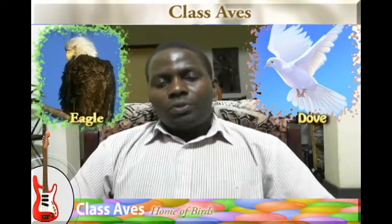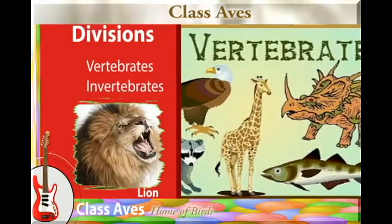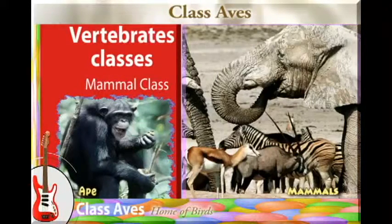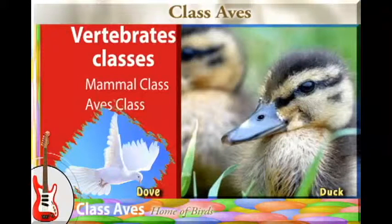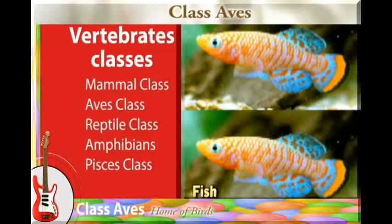Welcome again to this session where we are going to talk about birds. To remind ourselves, we need to go back and find out what other classes there are. Previously we talked about the divisions of the animal kingdom. We talked about the vertebrates, and within the vertebrates we have different classes: the mammalian class, the Aves class which includes the birds, the reptiles, the amphibians, and the fish. Now we want to look at the characteristics of Class Aves, which is the class that consists of birds.